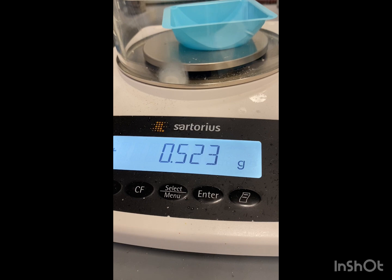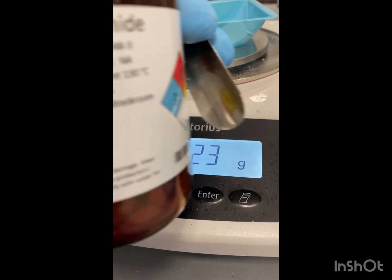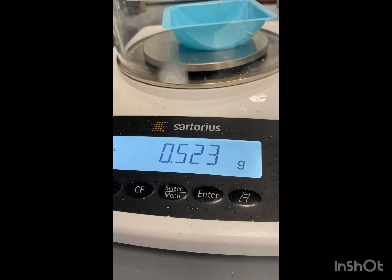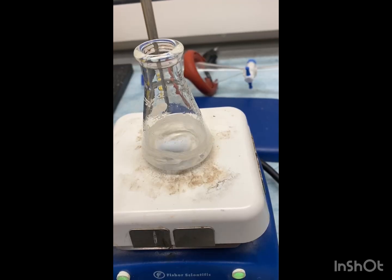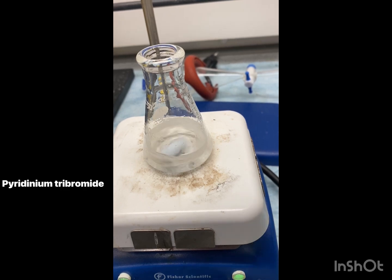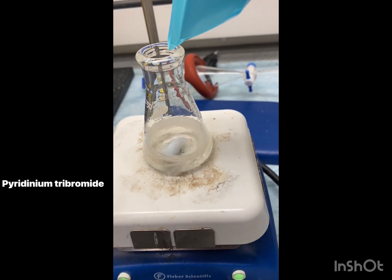So we have 0.523 grams of our pyridine tribromide. Now that our transtilbene has been dissolved, we're going to add our pyridine bromide.